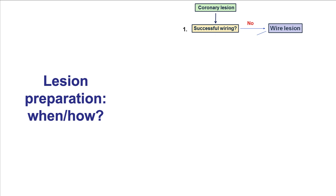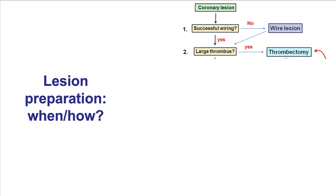Here is an algorithm about how to determine whether lesion preparation should be done and with which modality. The first step is to confirm that successful wiring has occurred through the lesion, since every lesion preparation modality requires this. The wire should be placed distally into the coronary vessel, but not into a small branch that could lead to perforation or other complications.